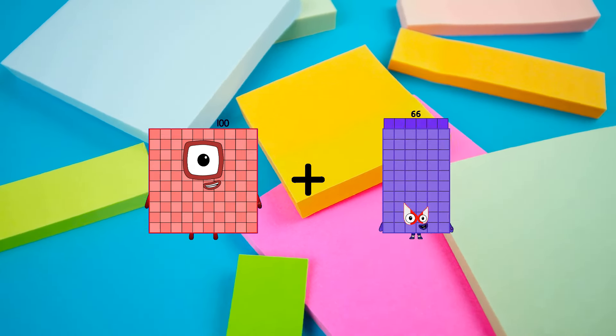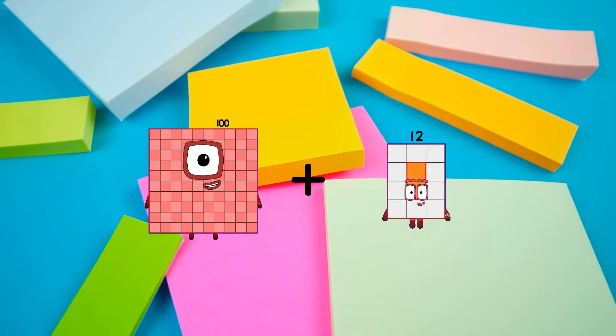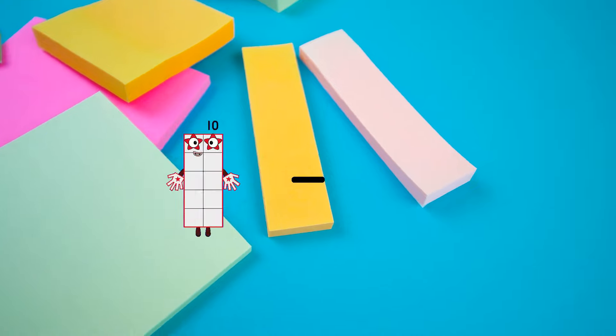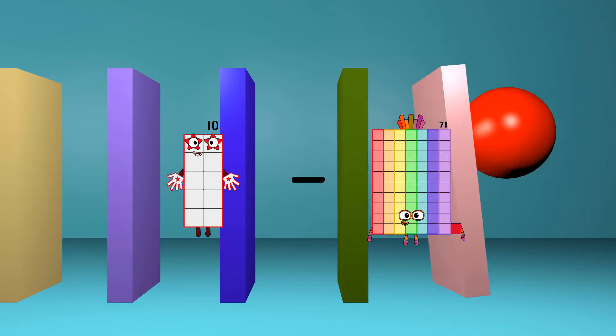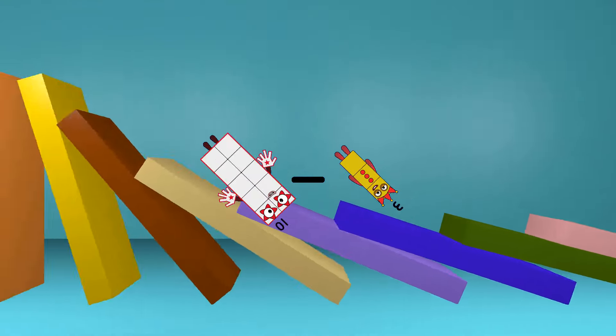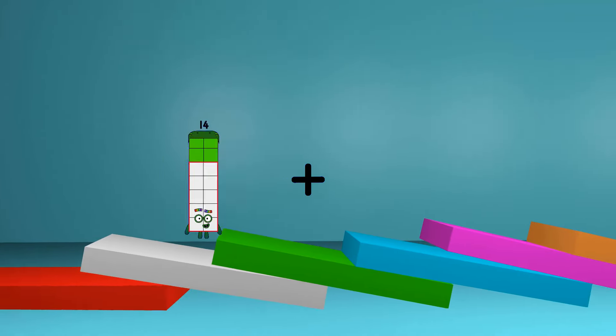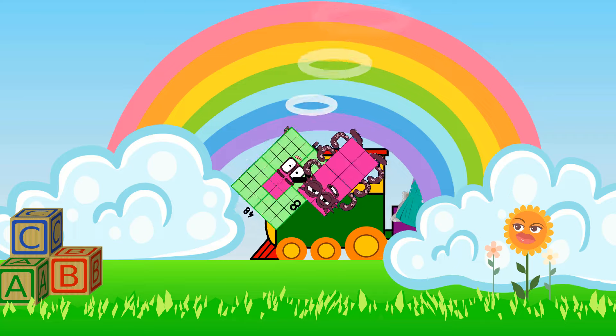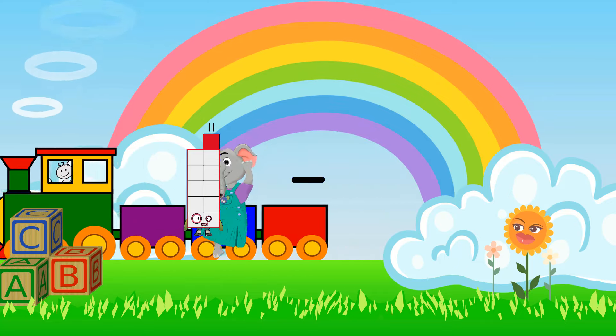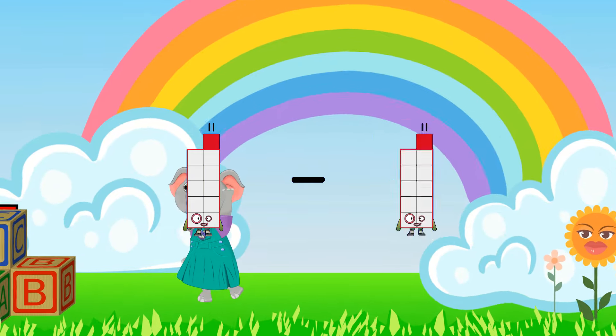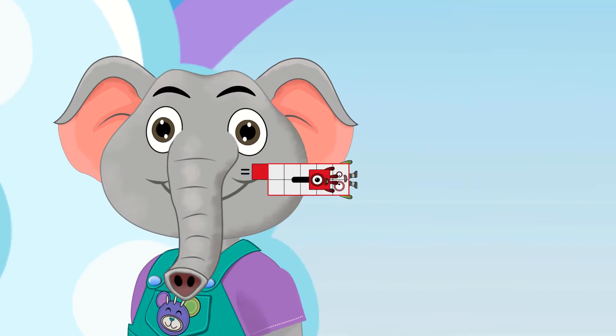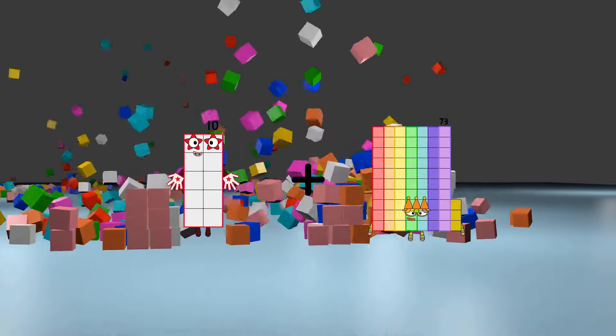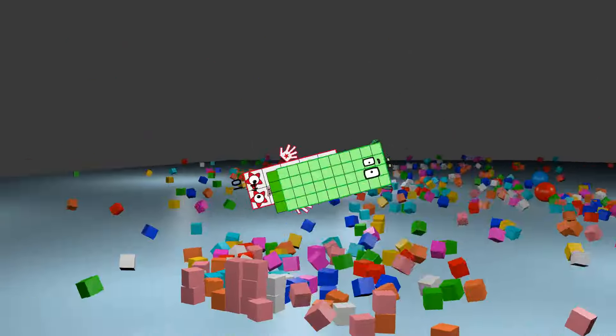100 plus 97 equals 197. 10 minus 3 equals 7. 48 plus 8 equals 56. 11 minus 1 equals 10. 10 plus 44 equals 54.